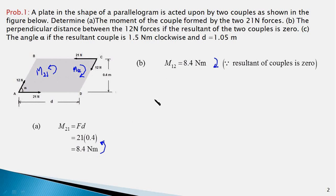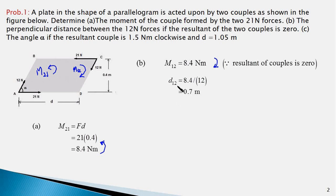The perpendicular distance between the 12-newton forces equals 8.4 divided by 12 newtons. Therefore d12 is 0.7 meters, and that's the answer.